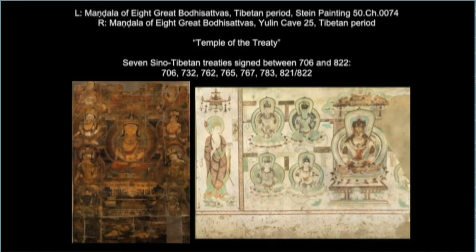The construction of the temple, the treaty, and the siting of Yulin Cave 25 in what is essentially eastern Tibetan territory coincides with another project meant to bring together the Chinese and Tibetan communities in the Dunhuang region — a sutra copying project carried out between the 820s and 840s at Dunhuang, seemingly under Chinese scribes. In this project, many copies of various texts were copied in Tibetan as a way of commemorating and honoring the then Tibetan emperor. I also want to draw attention to the cartouches in the mural painting on the rear wall of Yulin Cave 25, which have both horizontal and vertical orientations, suggesting they were intended for both Tibetan and Chinese inscriptions.